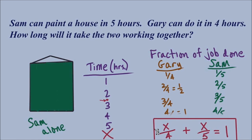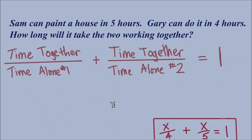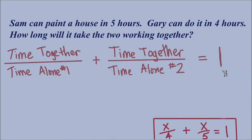Once we solve this equation we will have x — the time it would take both Gary and Sam working together to paint the house. The model: time together is in both numerators; time one person working alone is in one denominator; time the other person working alone is in the second denominator. These fractions represent fractions of the job completed, so adding them together should equal one completed job.